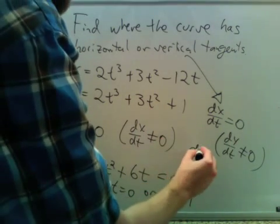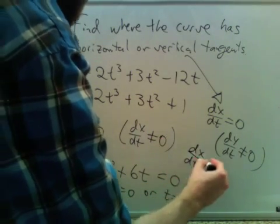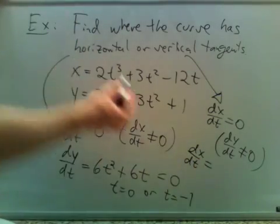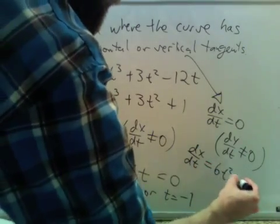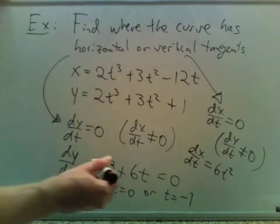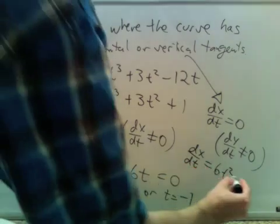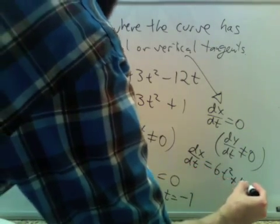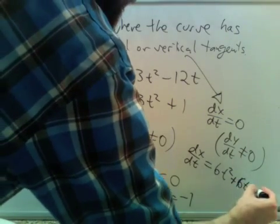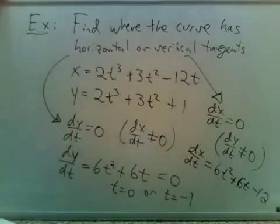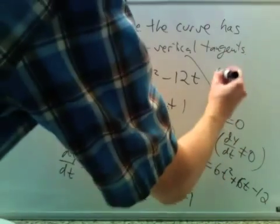And let's look at dx/dt. We have 6t squared plus 6t minus 12. Let's see when this is 0.